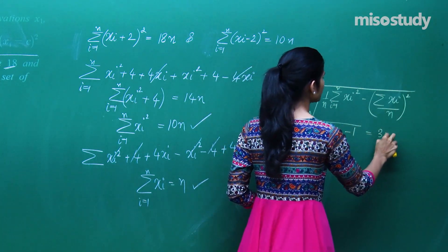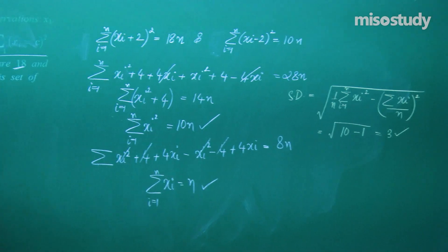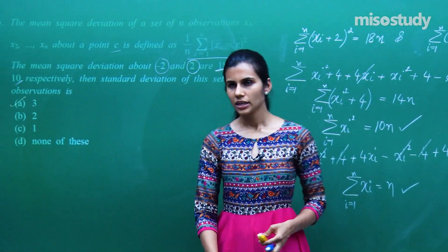So you have under root 9. So 3 is your standard deviation. So your correct option is option A.